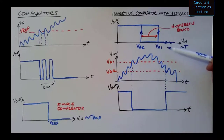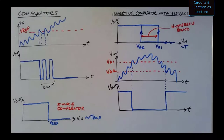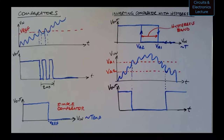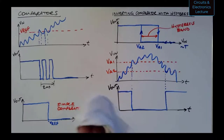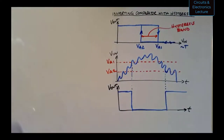The thresholds alternate: when output is high you go from high to low only by crossing Va1; when output is low you go from low to high only by crossing Va2. These sensors are also used in automatic light sensors — when the light sensor has a low output voltage it energizes the circuit to turn the light on, through a transistor, relay, or solid-state relay.